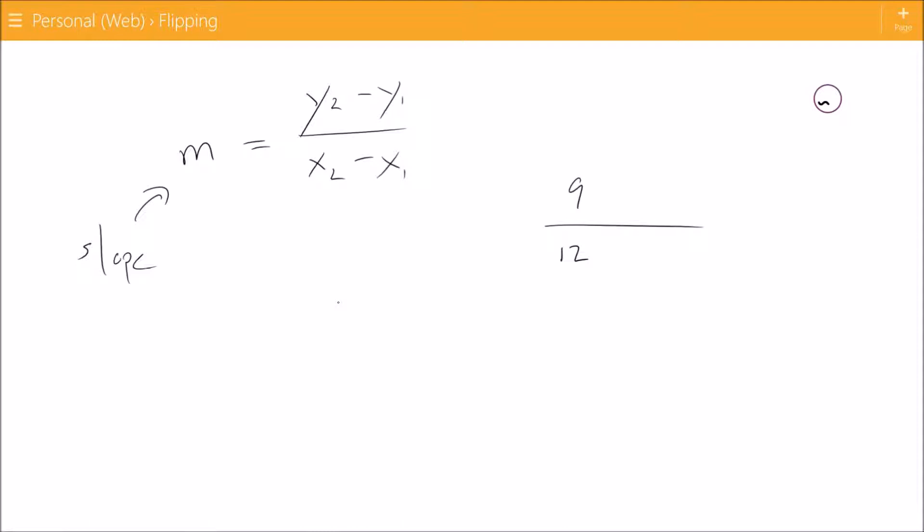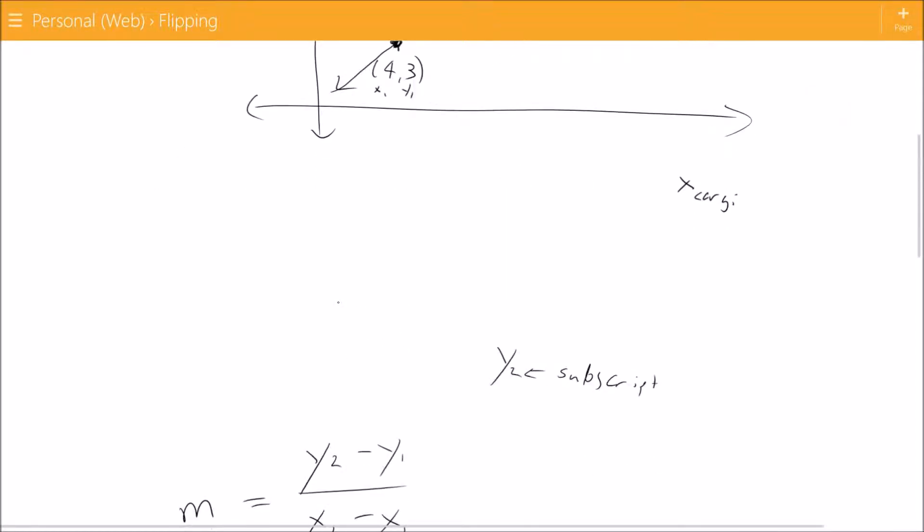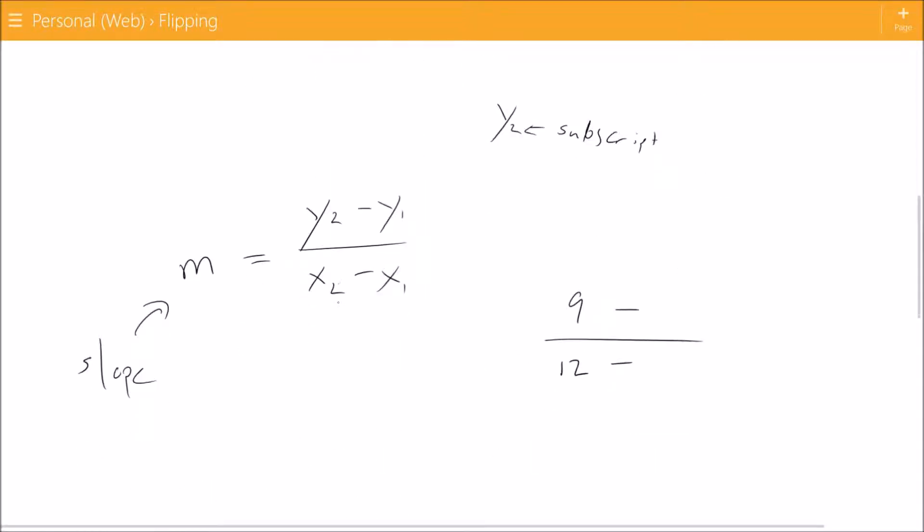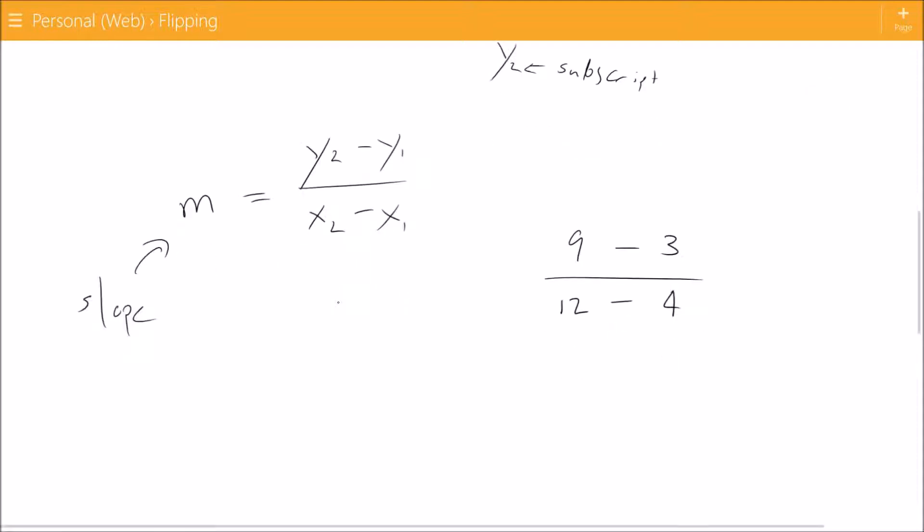And I'm going to subtract from both of these because that's in the formula. The 4 is going to go on the bottom because that's an x, and then the 3 goes on top because that's your y.